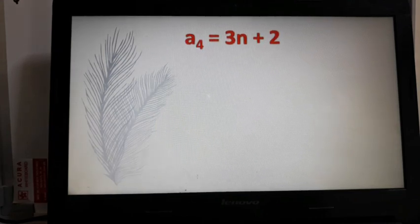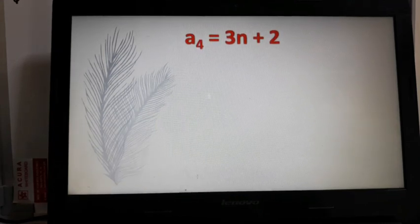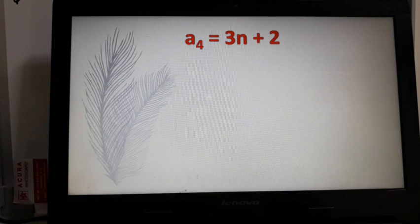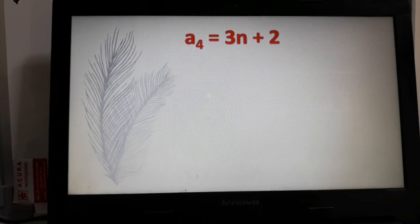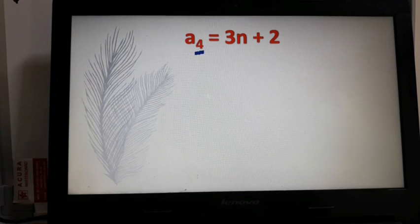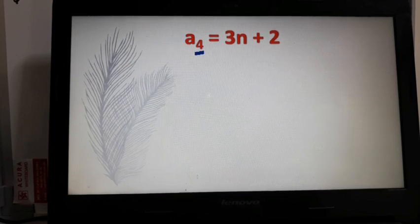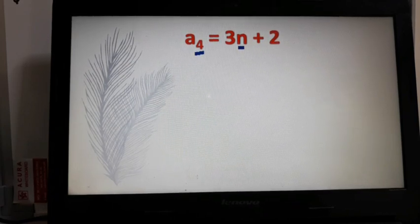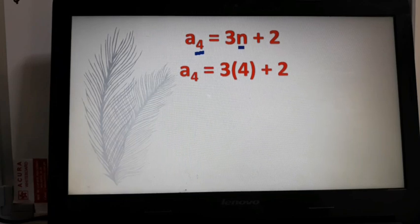Let's go to the fourth term. So our fourth term, the formula is a_4 equals 3n plus 2. Since we are looking for the fourth term, a_4, your n will be replaced by 4. So that will be 3 times 4 plus 2.